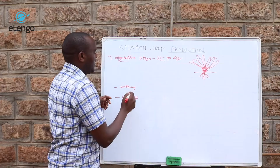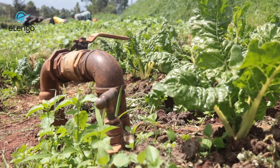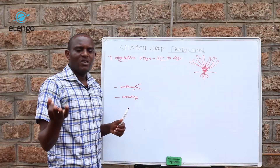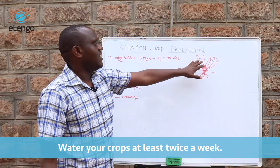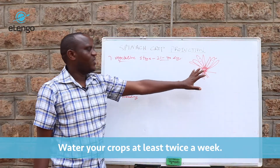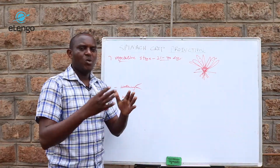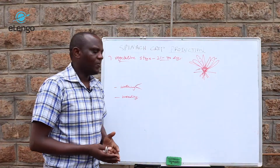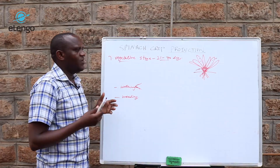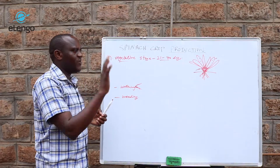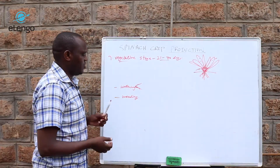Watering here is very critical. If it is not raining or water is not sufficient, we are looking at watering maybe twice a week, so that the spinach crop has enough water. The leaves are succulent and it is very important for them to get all the water they need so they can continue expanding and growing. If it is not raining, do irrigation twice a week — Monday and Thursday would be desirable days.